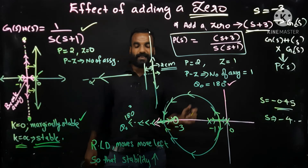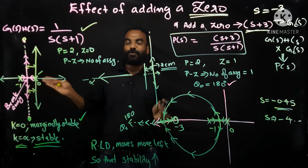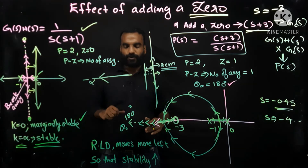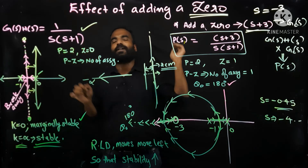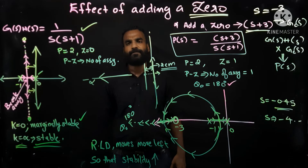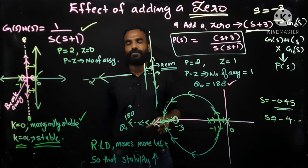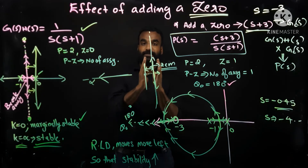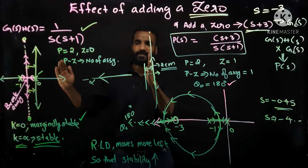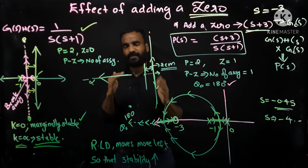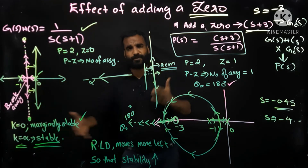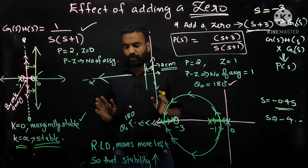So, adding a zero increases stability. In contrast, from the last class, adding a pole caused the root locus diagram to move to the right, closer to the imaginary axis, reducing stability. If asked what happens when you add a pole to a system: stability will reduce because the root locus diagram moves closer to the imaginary axis, giving less freedom. When you add a zero, your margin of stability increases and you are far away from the imaginary axis.